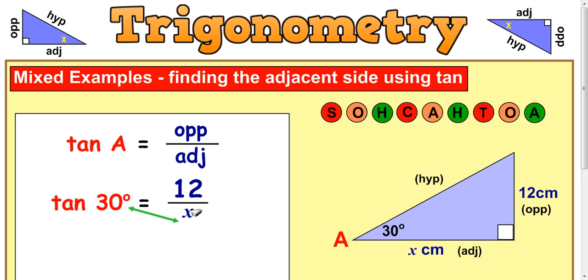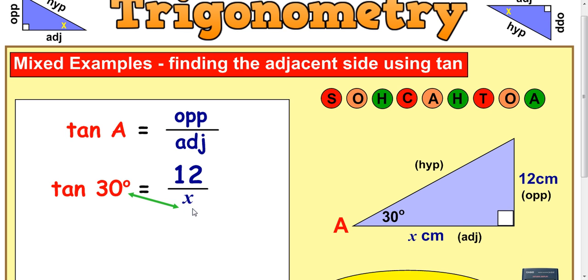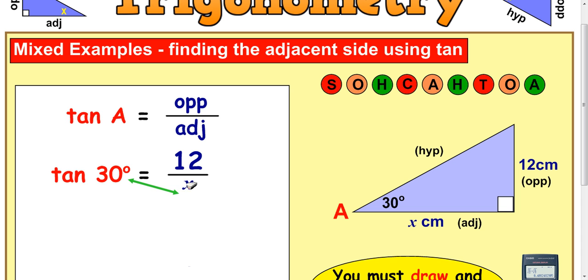So, we have this problem here where the unknown is in the bottom. Now, what we did before was we multiplied up by the number here. We did tan 30 times 12, or 14, or whatever the value at the bottom was. We can do the same thing here. We can multiply tan 30 by x, and that's going to look like this.